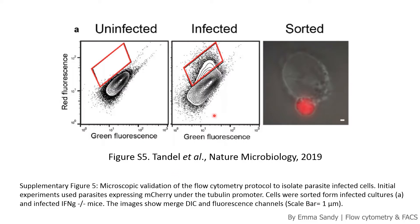First we've got a contour plot. Here the authors were sorting for cells infected with a red fluorescent parasite. On the y-axis we have red fluorescence, which the infected cells will score higher for — but remember that uninfected cells will also have some background autofluorescence. You can see that the gate is drawn on the uninfected cells in the red box, then copied over so that any cells inside the gate on the infected graph are the ones infected with the red parasites. These infected cells have been sorted and you can see under microscopy that the red parasite is present.